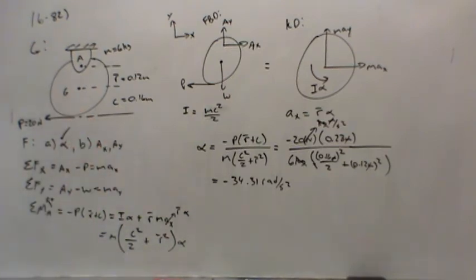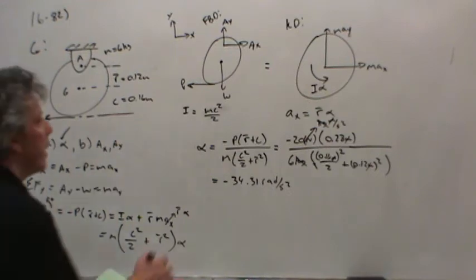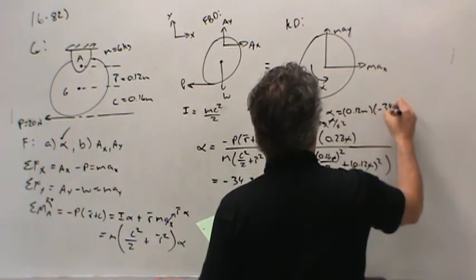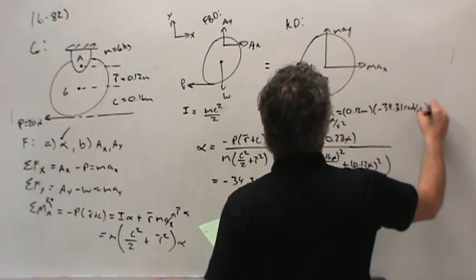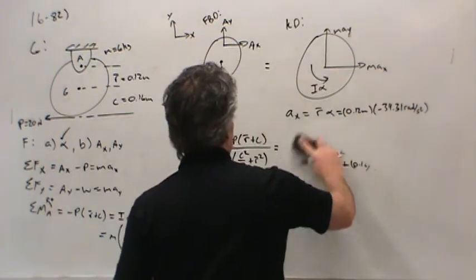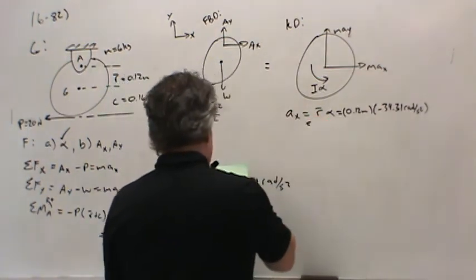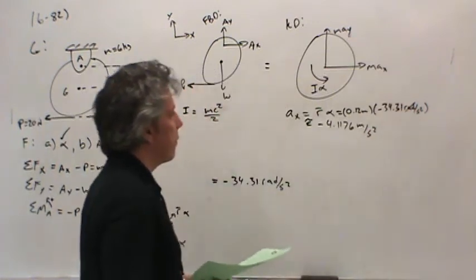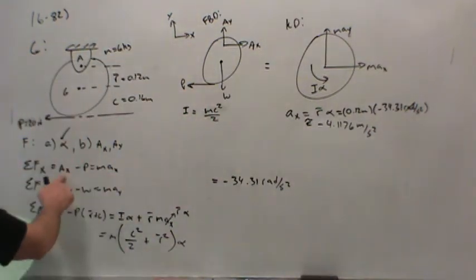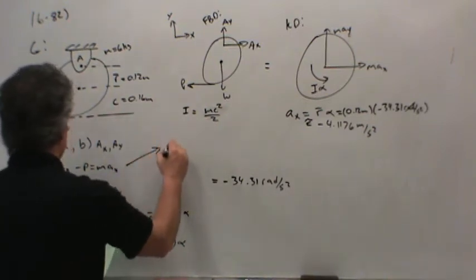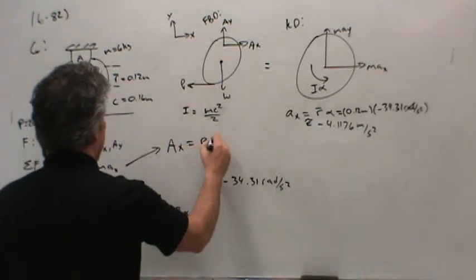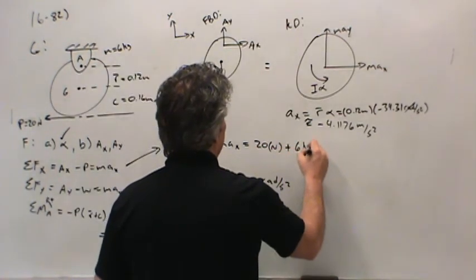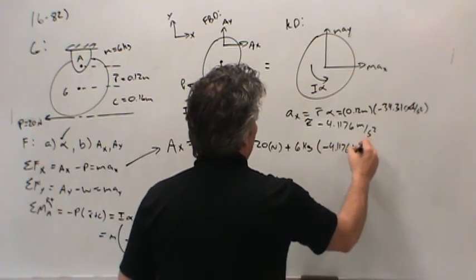Now that we've got the angular acceleration, we can get Ax. Multiply 0.12 meters by alpha, negative 34.31 radians per second squared. Ax comes out to about negative 4.1176 meters per second squared. Now we can solve for Ax, the force in the x direction: Ax equals P plus M times acceleration in the x direction. That's 20 newtons plus 6 kilograms multiplied by negative 4.1176 meters per second squared.